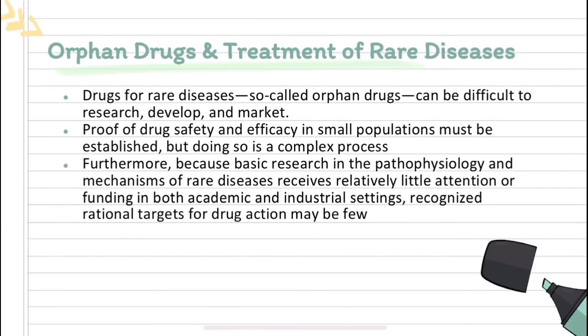Orphan drugs and treatment of rare diseases: drugs for rare diseases — so-called orphan drugs — can be difficult to research, develop, and market. Proof of drug safety and efficacy in small populations must be established, but doing so is a complex process. Furthermore, because basic research in the pathophysiology and mechanisms of rare diseases receives relatively little attention or funding in both academic and industrial settings, it is difficult to identify rational targets for drug action.